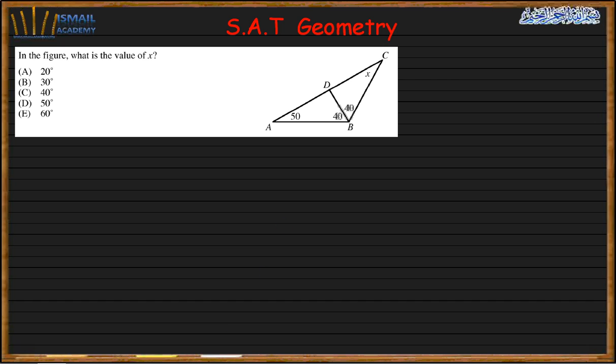In the figure, what is the value of x? This angle is 50 and this is 40, which means the sum of those two is 90. The sum of the internal angles of a triangle is 180.